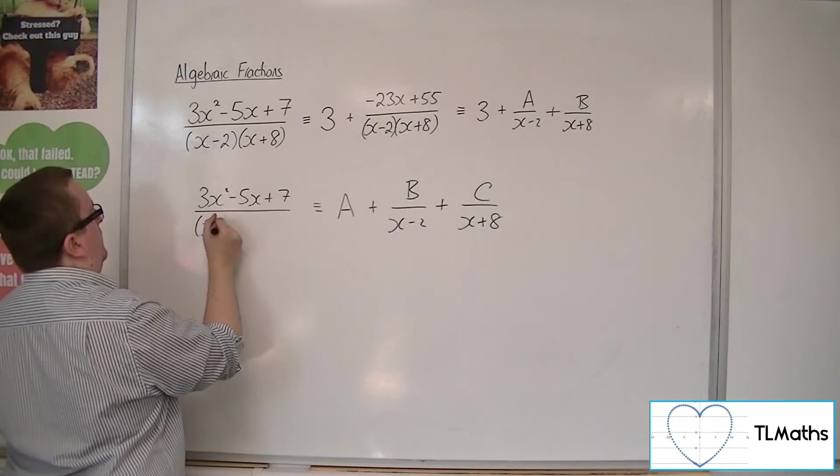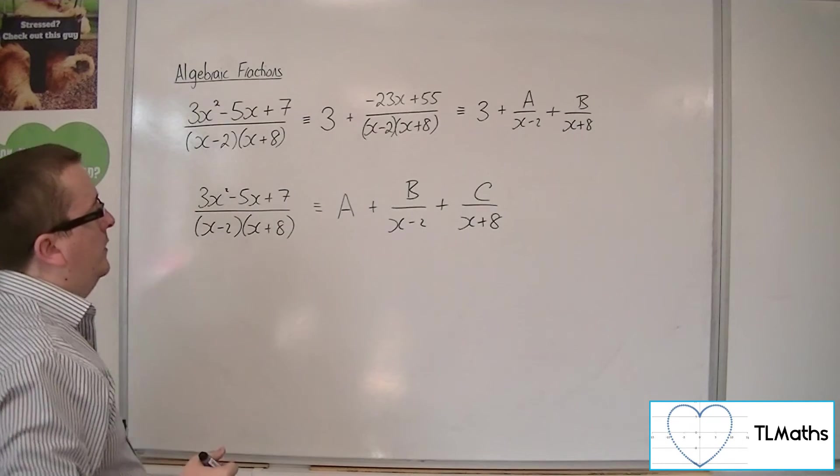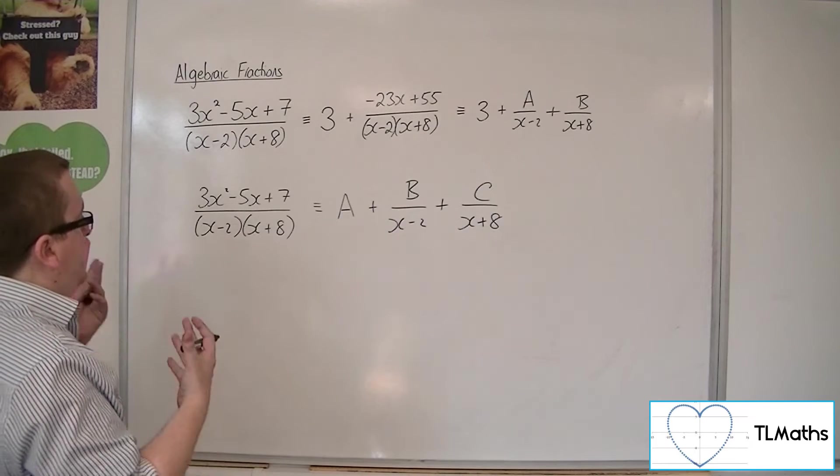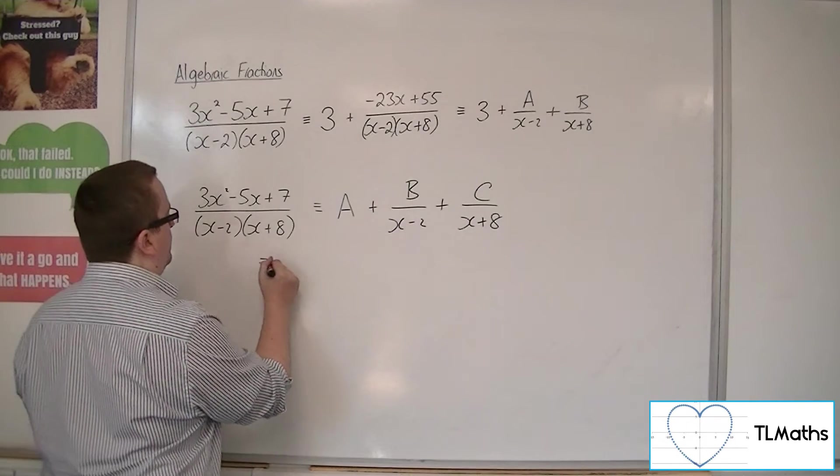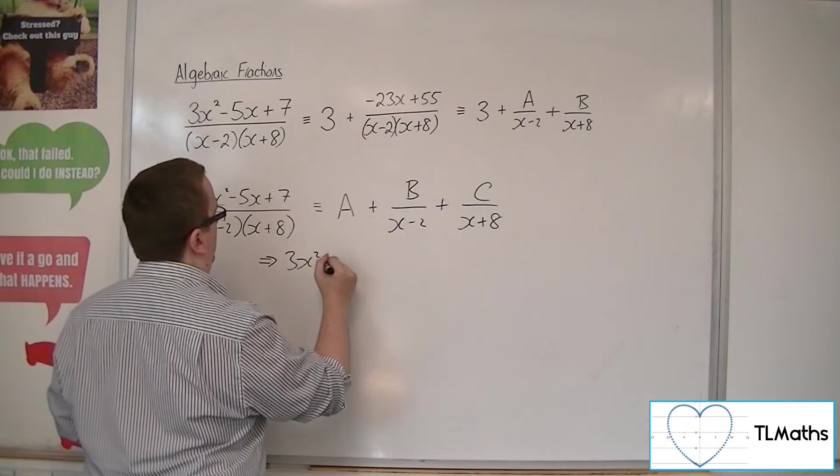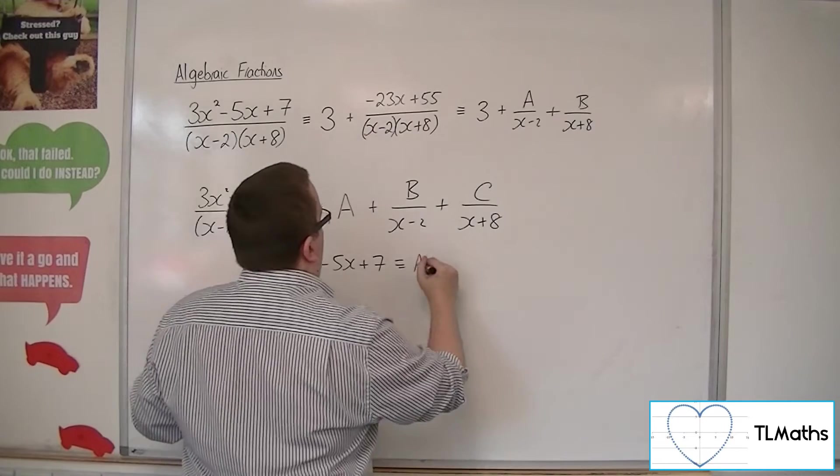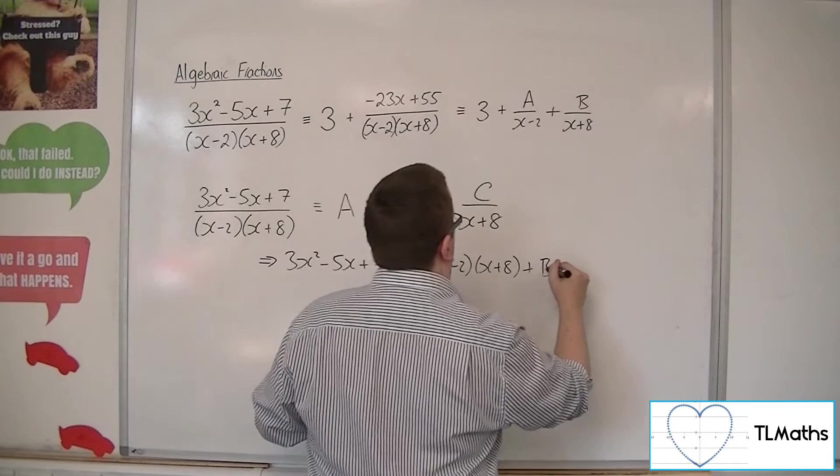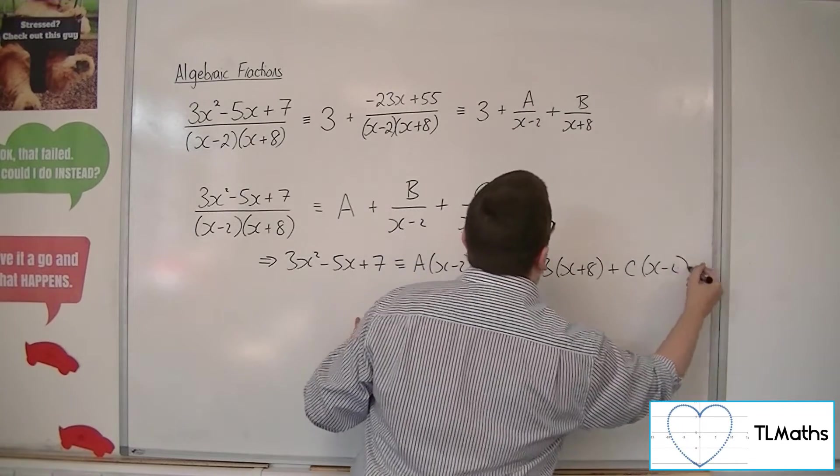So if I rewrite that like that, then you're saying to yourself, well okay, now I can multiply both sides by x minus 2 times x plus 8. And I'm going to get a lots of x plus 8 plus b lots of x plus 8 plus c lots of x minus 2.